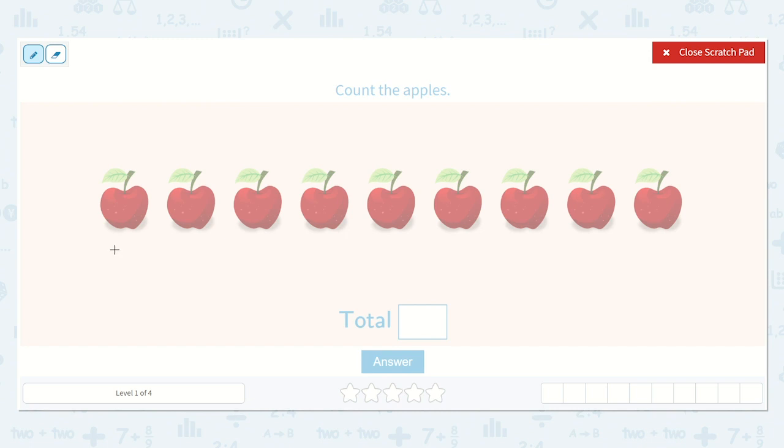So let's count. I like to draw lines under what I'm counting so I don't lose track as I go. Let's count together. One, two, three, four, five, six, seven, eight, nine. I counted nine apples total.